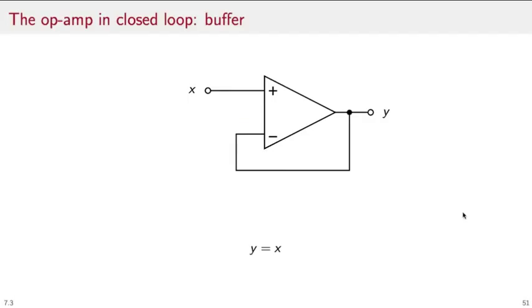The input-output relationship of the closed-loop is output equal to the input. This configuration is known as a buffer stage because although the output has the same voltage as the input, the second property of the ideal op-amp prevents any current from flowing into the amplifier, and therefore there is a separation between this side and that side of the amplifier.